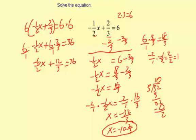Then I'm going to simplify each of these fractions. Negative 6 divided by 2 is negative 3, so we're going to have negative 3x plus 12 divided by 3, which is 4, equals 36.